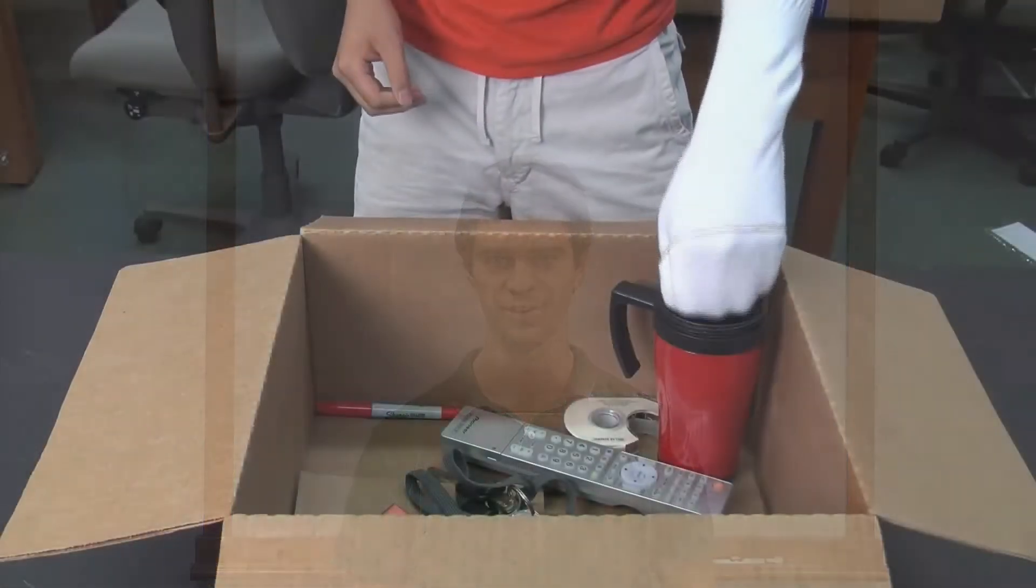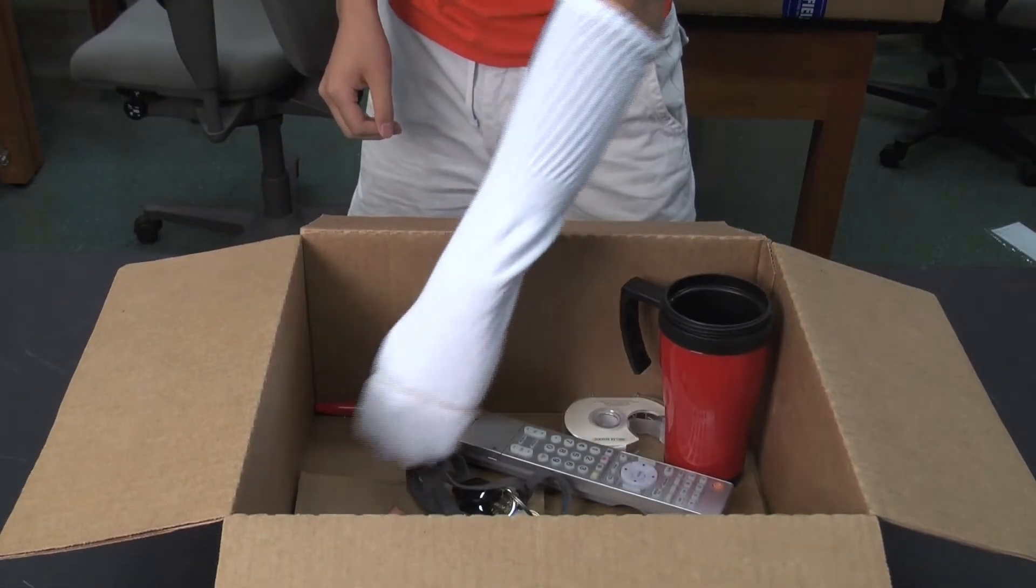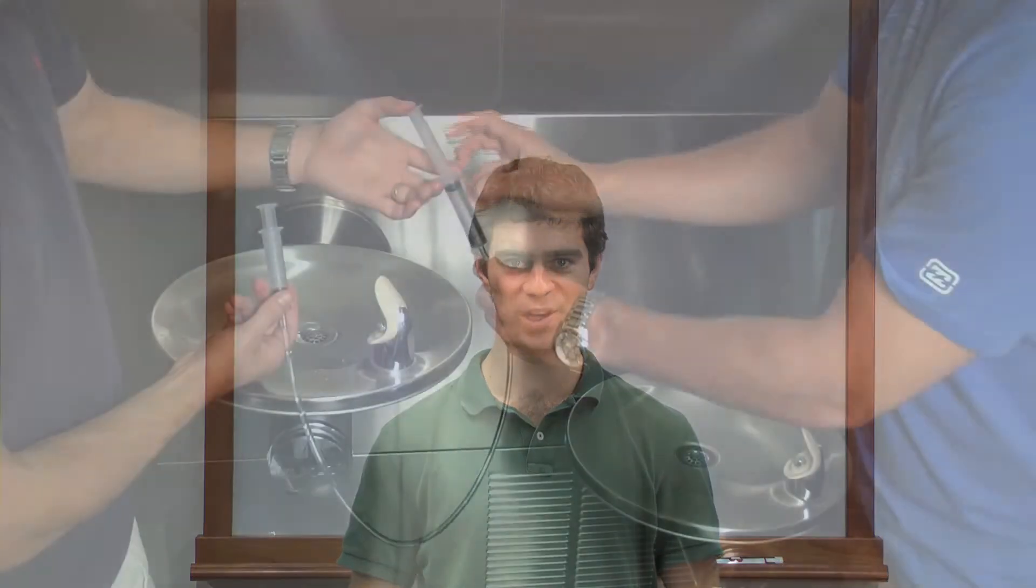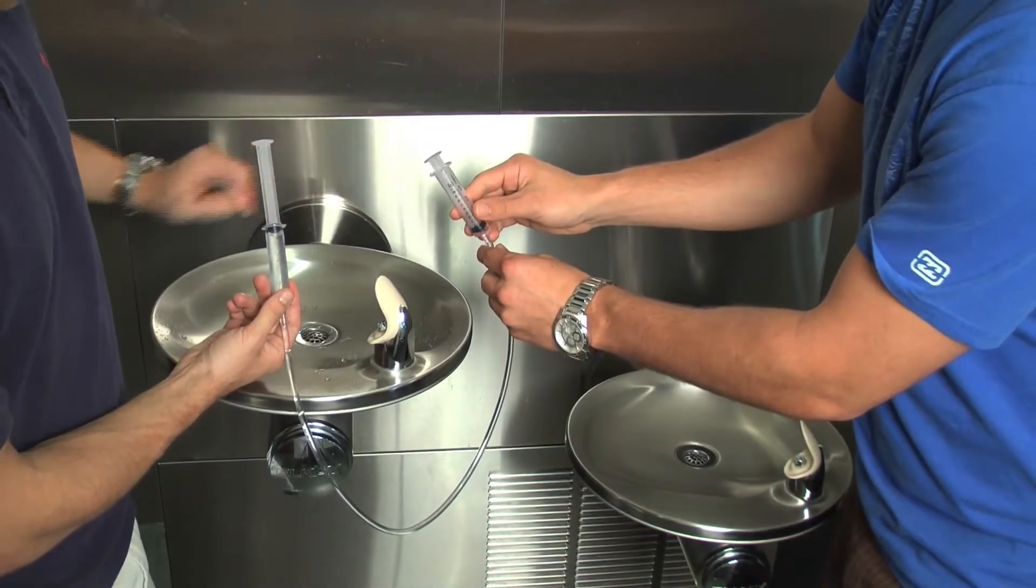In the first activity, the students look at why somebody would need a bionic arm. That's the problem they're trying to solve. In the next four activities, we follow the pattern of teaching a science concept in one activity and then using that science concept to solve an engineering design problem in the next activity.